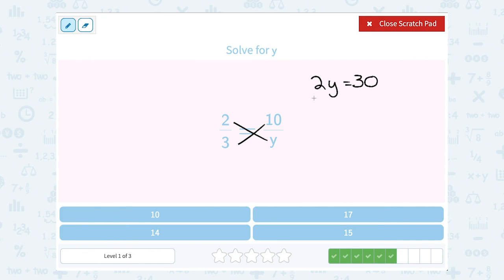Since y is being multiplied by 2, our opposite or inverse is to divide by 2. When I cancel out those opposites, it leaves me with y. And 30 divided by 2 is 15. So y equals 15.